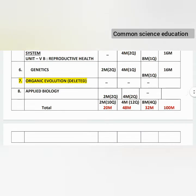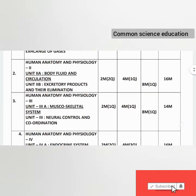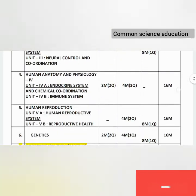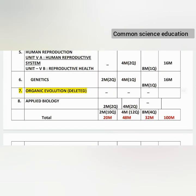For 2-mark questions: there are 10 questions worth 20 marks. For 4-mark questions: there are 12 questions worth 48 marks, from which 6 will be answered. For 8-mark questions: there are 4 questions, from which 2 will be answered. Total paper is 100 marks with 60 marks to attempt.